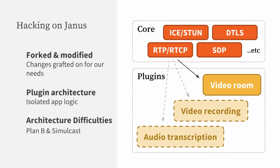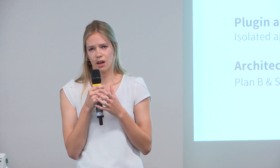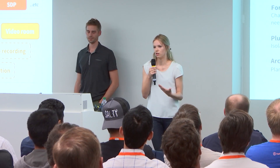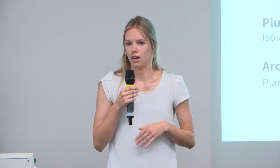A third challenge we faced in building video conferencing at Slack is working on Janus. Our SFUs are based off of Janus, which we forked a couple years ago. It uses a plugin architecture — the core part of Janus has all the WebRTC stuff: ICE, STUN, SDP, etc., and we add plugins for applications. We use the video room plugin because we host video rooms. That architecture made it difficult to add things we wanted, like Plan B and Simulcast, because there wasn't a clear differentiation of where the data would go — it was leaking through Janus. It made it really difficult to continue building on Janus, adding new features, and debugging crashes.